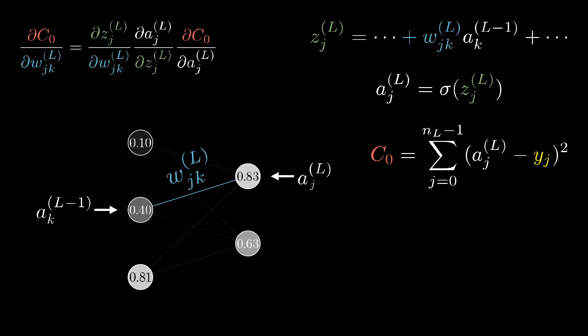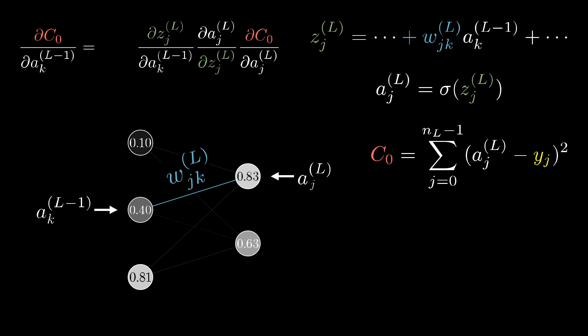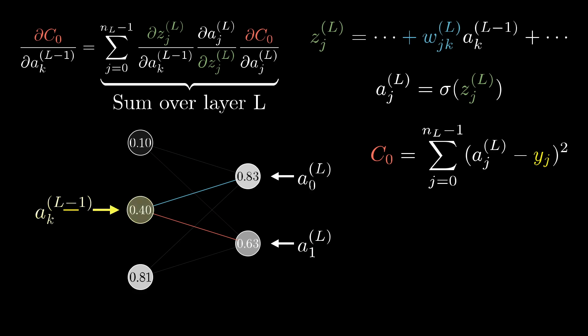What does change here, though, is the derivative of the cost with respect to one of the activations in the layer l-1. In this case, the difference is that the neuron influences the cost function through multiple different paths. That is, on the one hand, it influences a^l_0, which plays a role in the cost function, but it also has an influence on a^l_1, which also plays a role in the cost function, and you have to add those up.